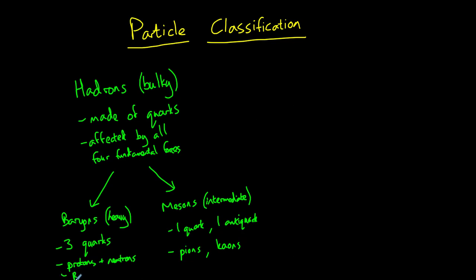All baryons have a baryon number of one, and all mesons have a baryon number of zero. In any interaction, baryon number must be conserved.